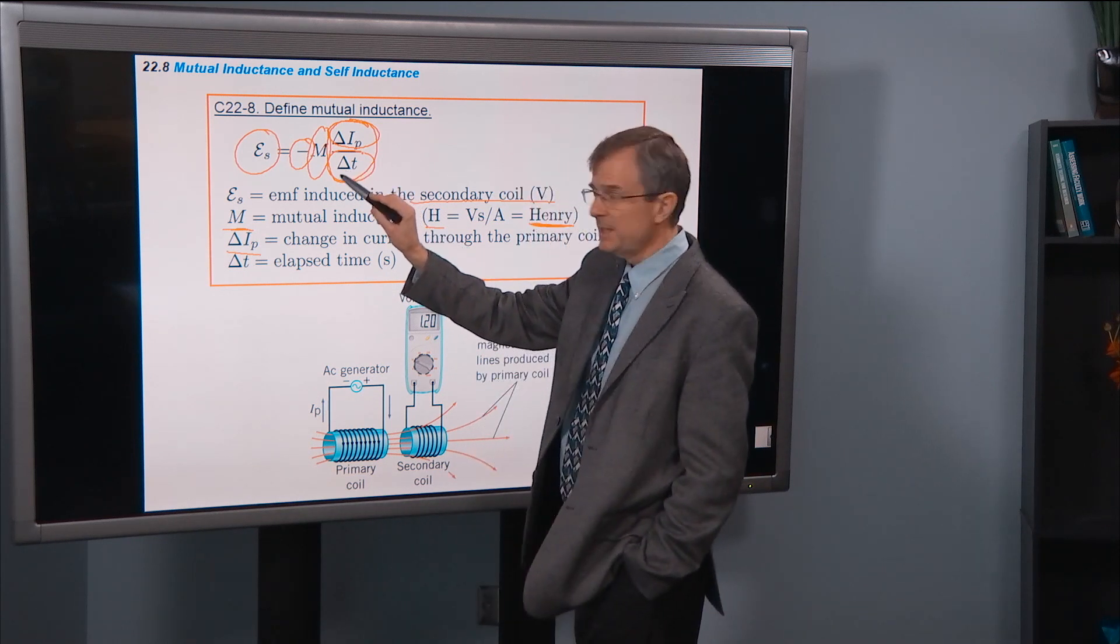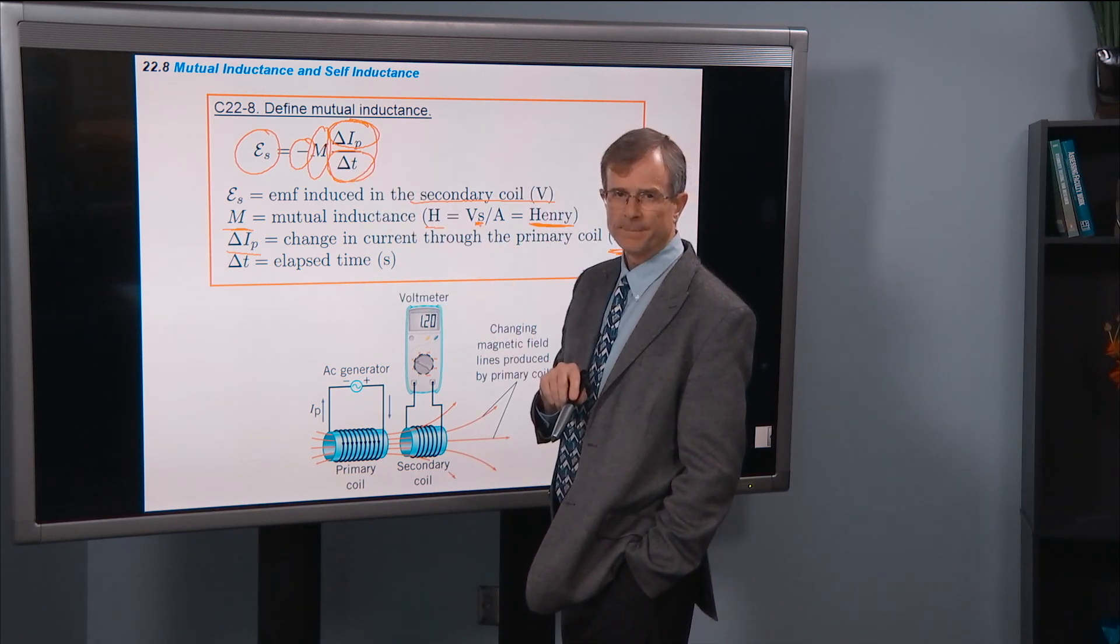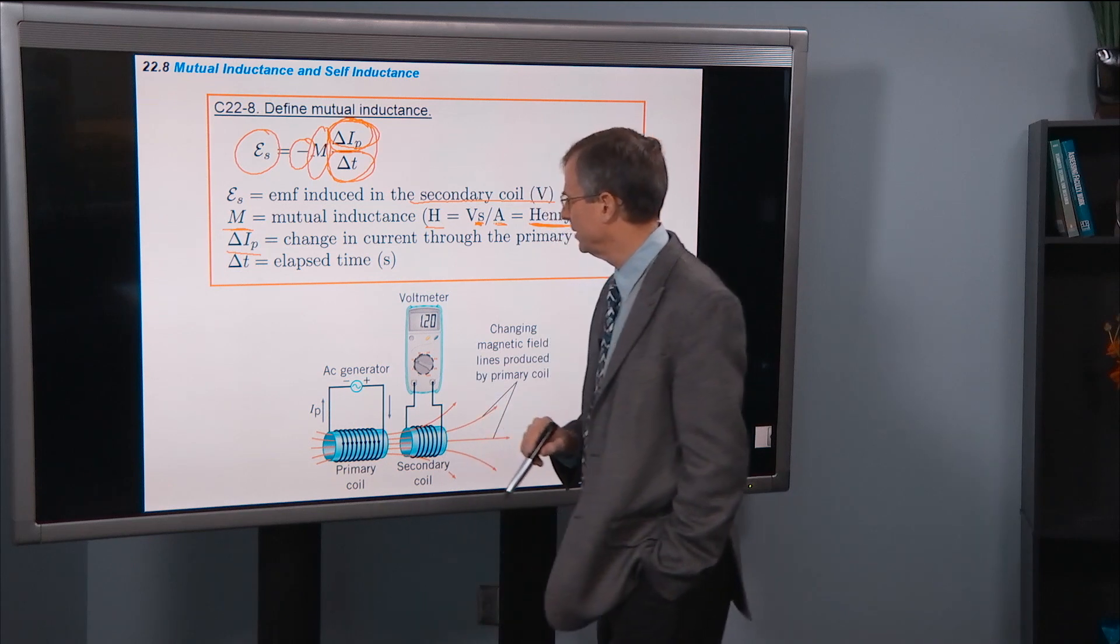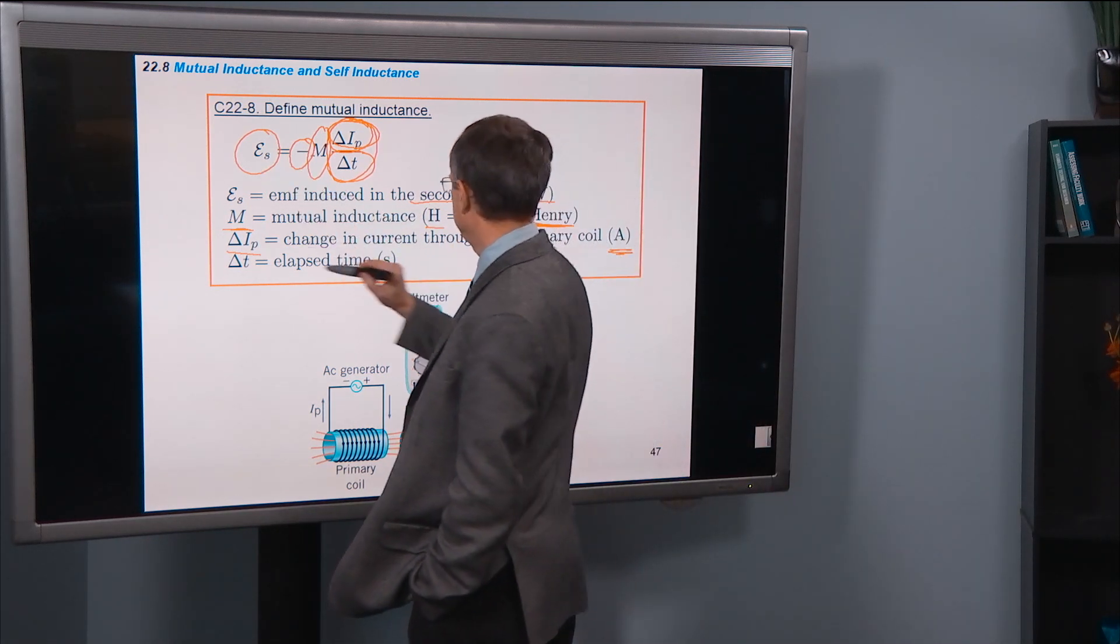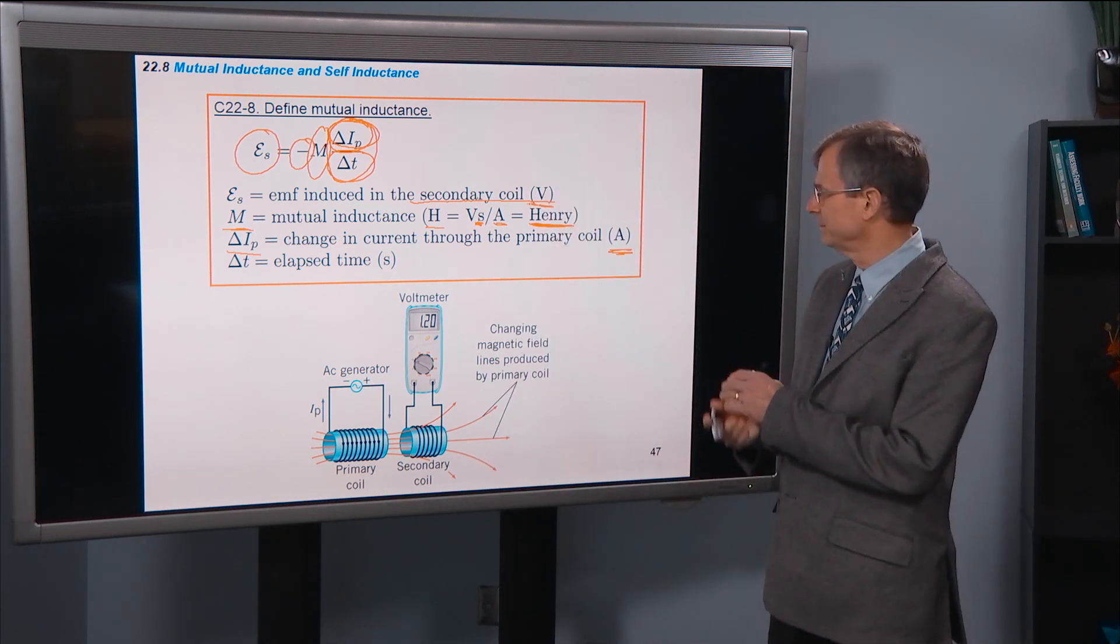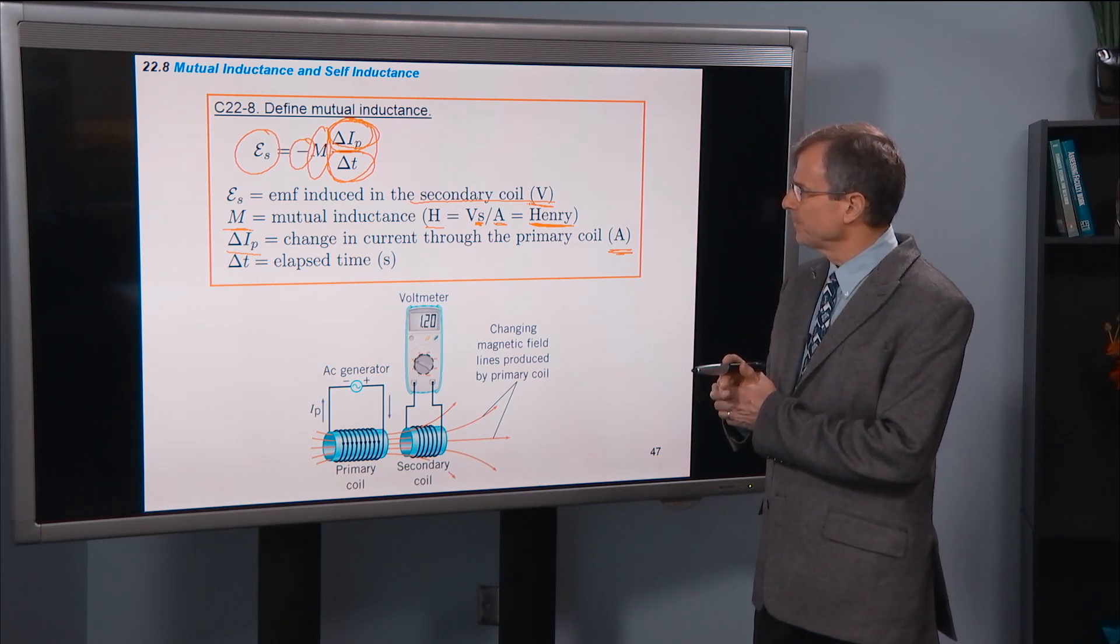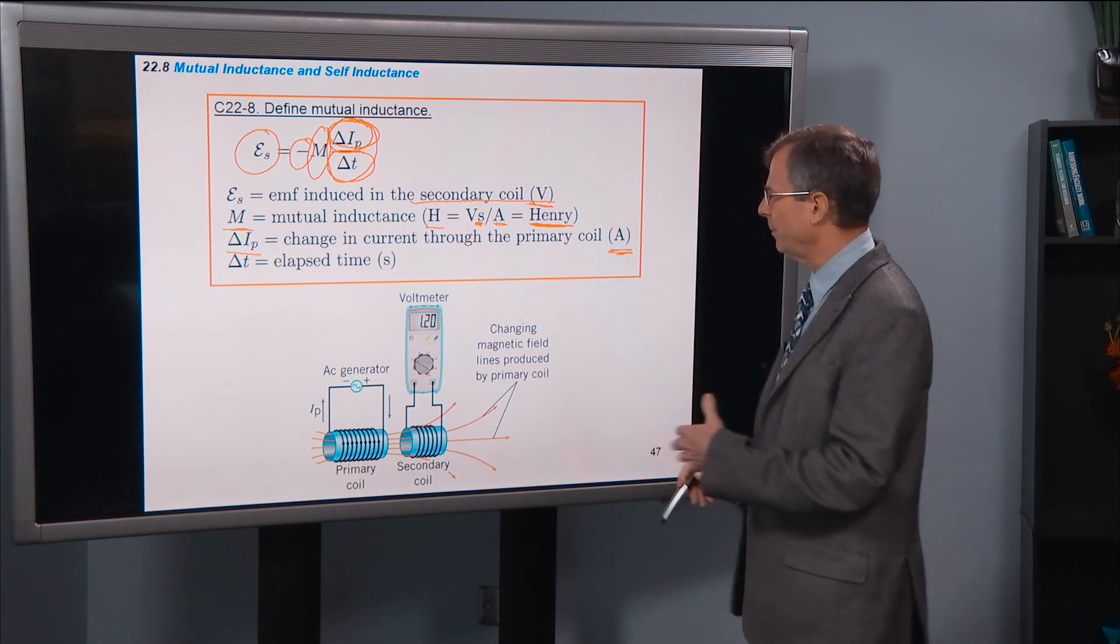The seconds from the delta T cancel the seconds here in mutual inductance. And the amps here cancel the amps here. And that gives you a voltage at the end of the day. So that's the unit of inductance called the henry. Made a guy named Henry very famous. So mutual inductance, minus M, delta I by delta T.